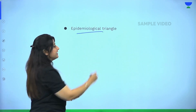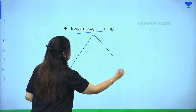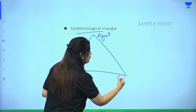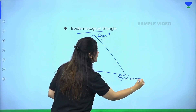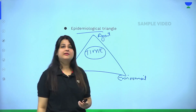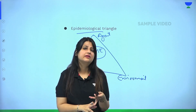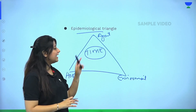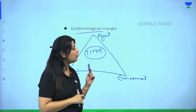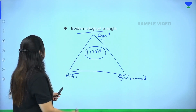Next came the Epidemiological Triangle, which is similar to the triad with agent, host, and environment — but here we added the concept of time. Time means we started considering the incubation period of a disease, the latent period, and related factors. So the Epidemiological Triangle deals with interaction and interdependence of agent, host, and environment while also considering time as a factor.